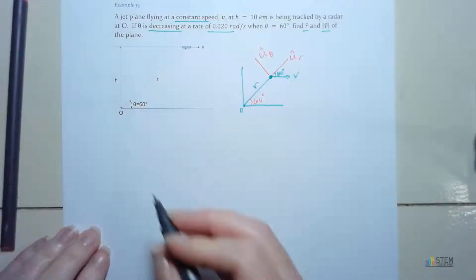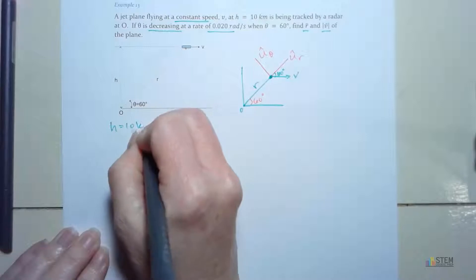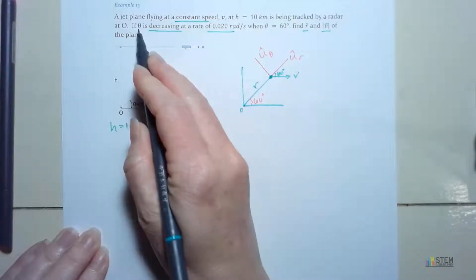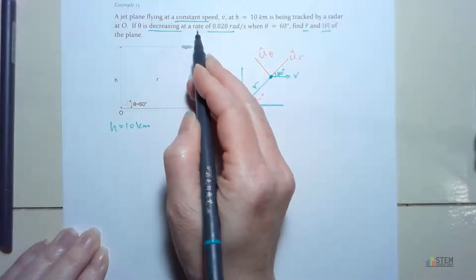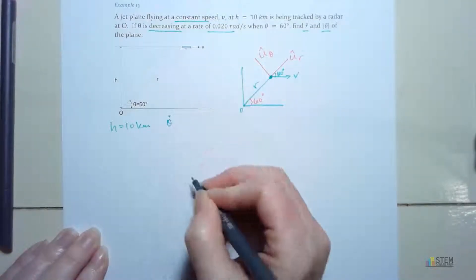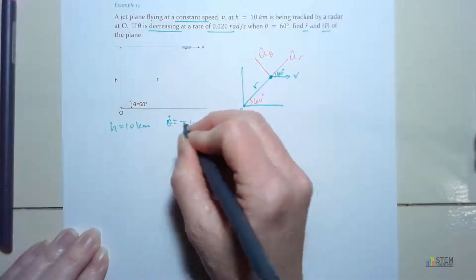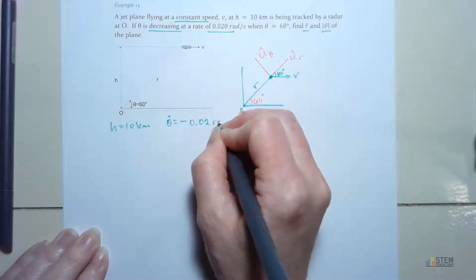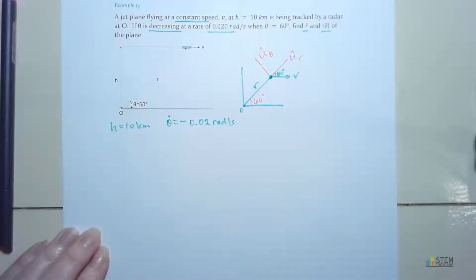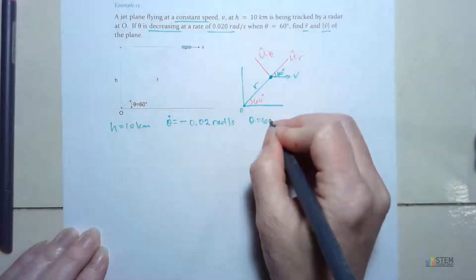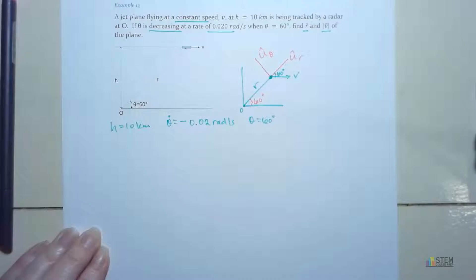So now we've got that established and this is 60 degrees right here. And one more thing, this angle right here, 60 degrees. So now that we've got that, let's write down what we know. We know H is 10. Now this right here, it tells us theta is decreasing at this rate. So if theta has this rate, that means that's theta dot. And decreasing means it's negative. So we're going to have negative 0.02, and that's radians per second. In these calculations, you should always have radians per second or radians per second squared. You shouldn't have degrees in here. Now, we also know theta, which is 60 degrees.